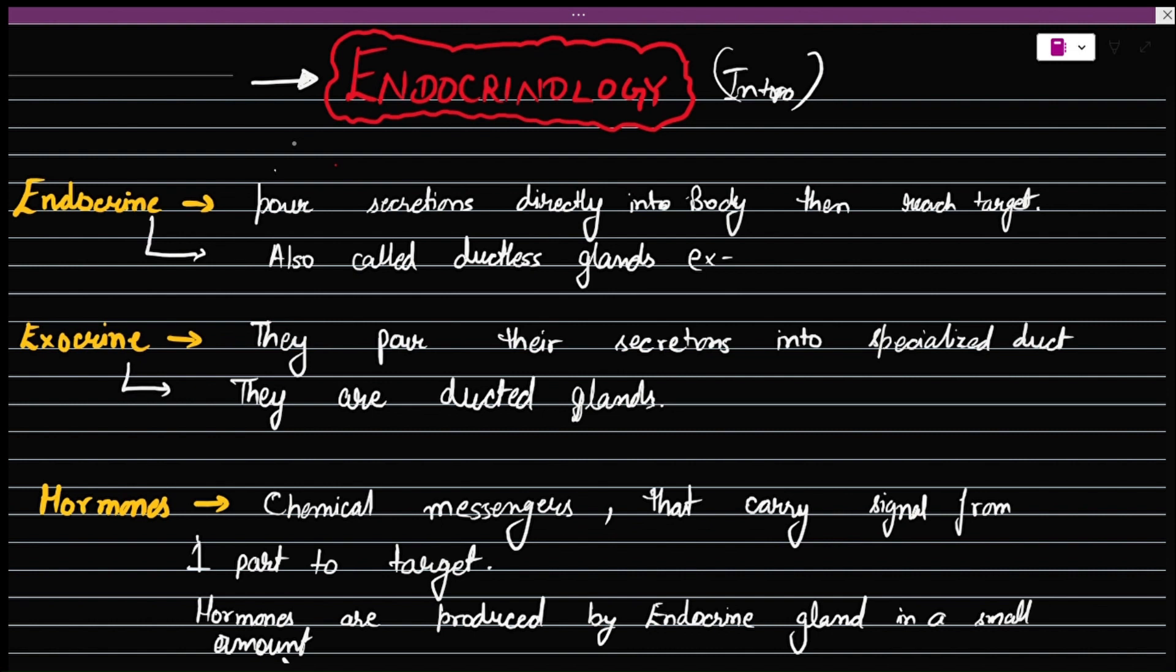First of all, let us start with the word endocrine. These are glands which are found in our body.